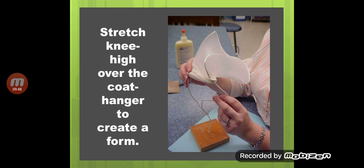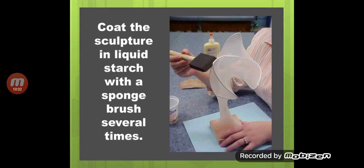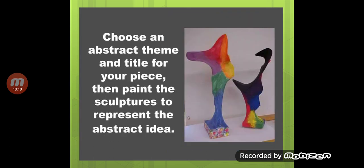You can stretch nylon stocking or similar material over the coat hanger to create a form. After that you can add colors according to your choice and according to your theme — whatever concept you want to present through your sculpture.